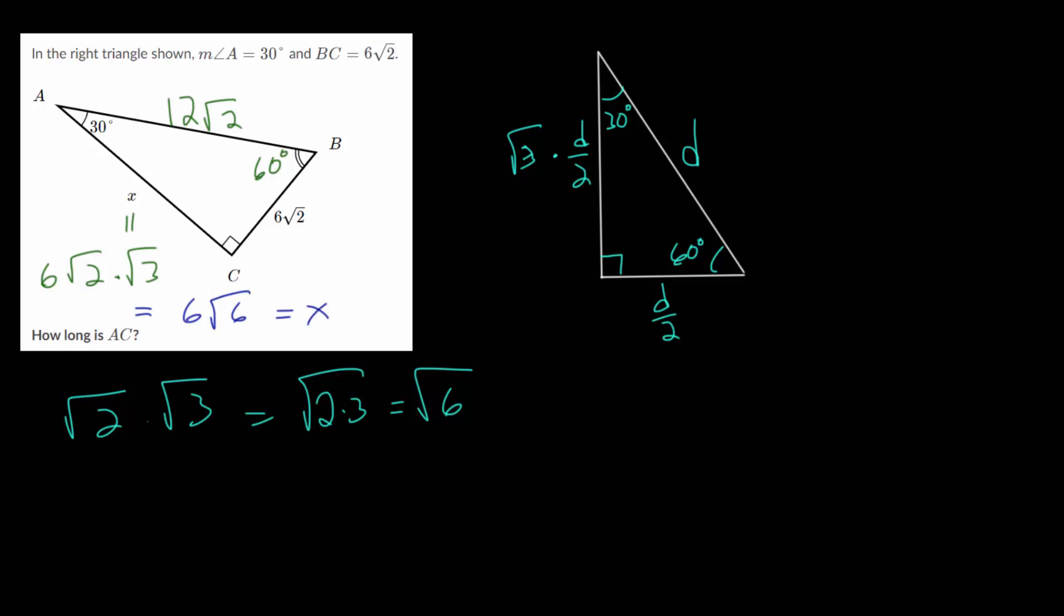And to feel confident that that is in fact the right answer, we can check this by using the Pythagorean theorem to relate the three side lengths. So we can take 6 root 6 and square that. We can take 6 root 2 and square that. And this should be equal to 12 root 2 squared. And this I will leave as an exercise so that you can check your work and get practice squaring these square roots.